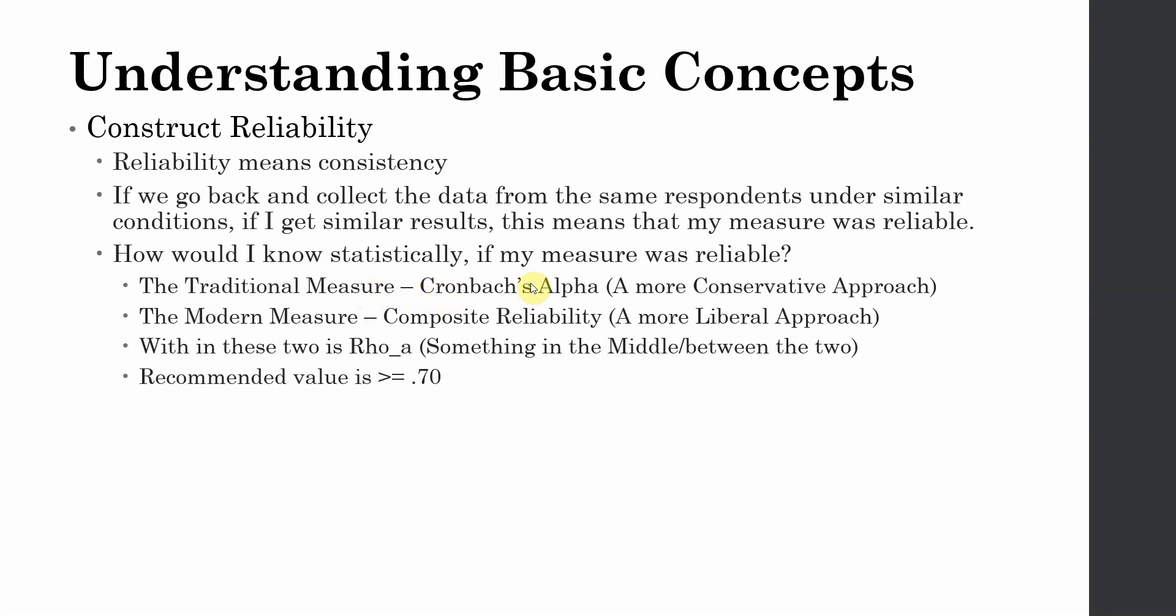Now there are traditional measures, that is Cronbach's Alpha, that is a more conservative approach. Then you've got a modern measure, composite reliability. This is a more liberal approach. And within these two, we've got a rho A that is something in the middle between the two. The recommended value is 0.70.